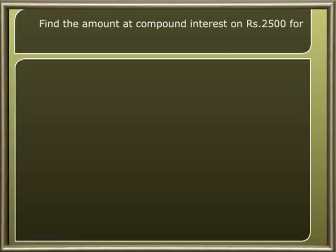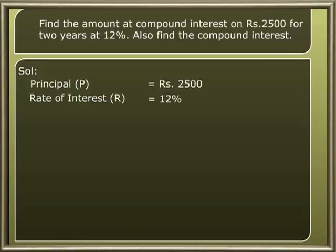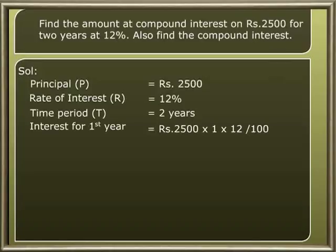Let us solve a simple example: find the amount at compound interest on rupees 2500 for two years at 12 percent, and also find the compound interest. Solution: principal P is equal to rupees 2500, rate of interest R is 12 percent, time period is two years. The interest for the first year is 2500 into 1 into 12 by 100, which is equal to 25 into 12, which is equal to 300.